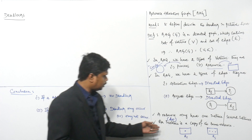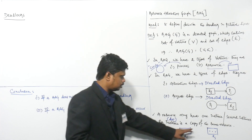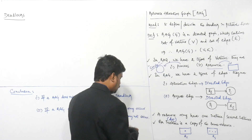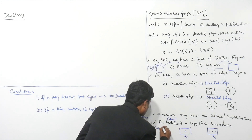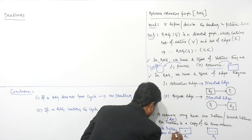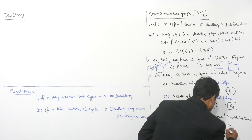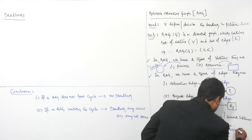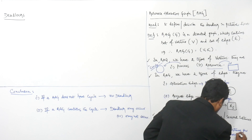Here, we are clearly saying that a resource has a single instance and a resource has multiple instances. So I can write here clearly: single instance per resource, and this one is multiple instances per resource.